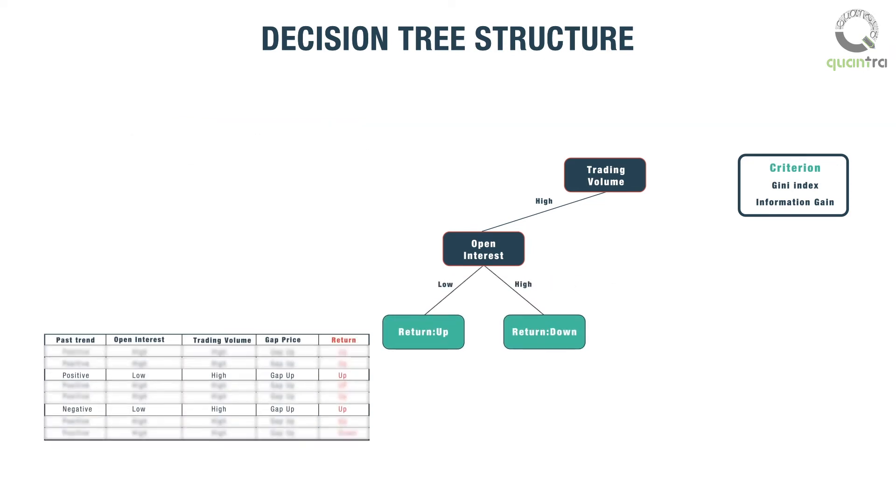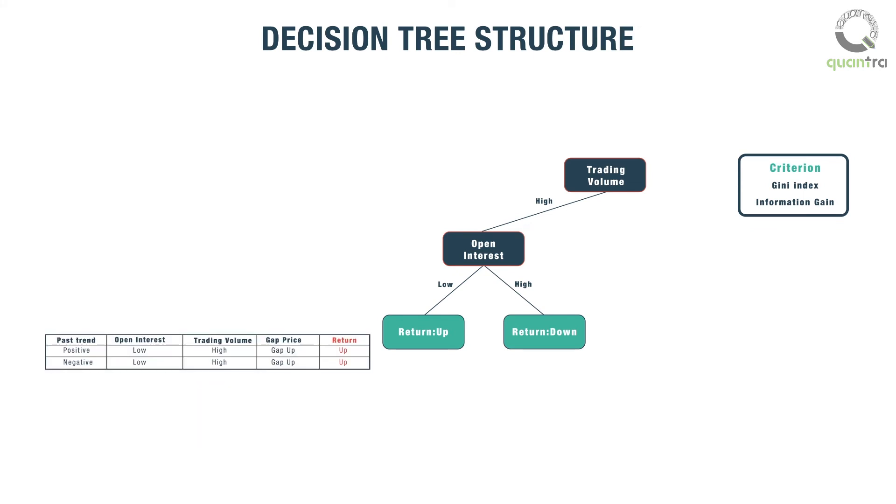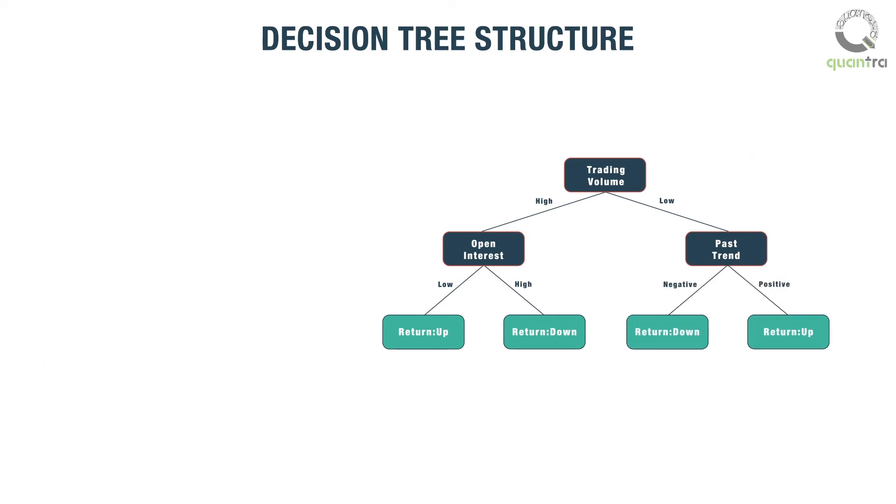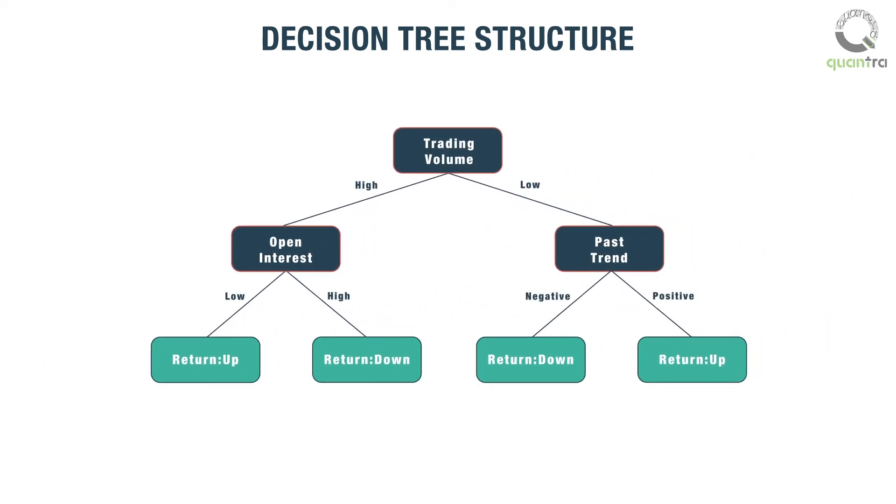This splitting process is carried out along all paths of the decision tree. When a decision tree is completely constructed, each leaf node is assigned to one target class.